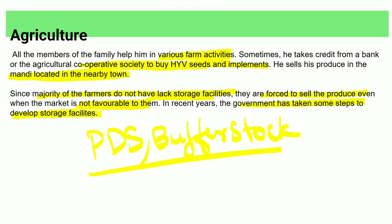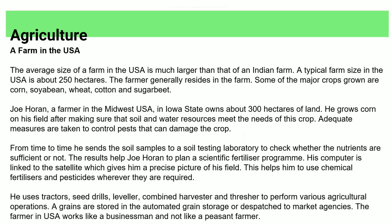The USA is larger than India and has millions of farmers. Joe Horan is a farmer in Iowa in the midwest USA who farms 300 hectares. He grows corn and soybeans. He manages his soil and water resources carefully and sends soil samples to the laboratory. He follows a scientific fertilizer program and his computer is linked with a satellite.